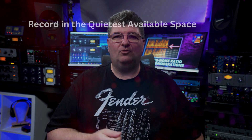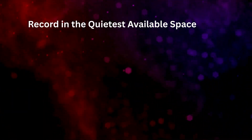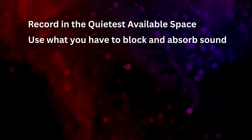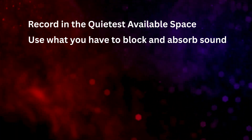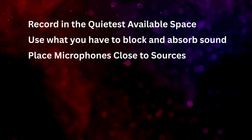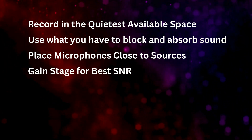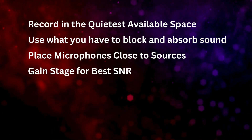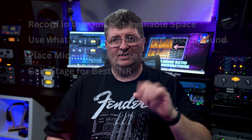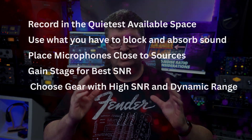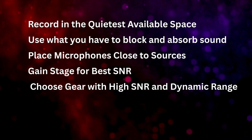Here are a few tips that will help you maximize the difference between signal and noise in your recordings and mixes to help you get studio-grade sound. First, record in the quietest environment you have access to, and use items you already have, such as towels and cushions, to block and absorb noise. Place microphones close to sources and facing away from unwanted noise-causing items. Gain staging is really important — don't over-amplify weak signals. I made a video about this to help you out. When purchasing, choose gear with a high SNR and dynamic range along with low noise floor specs.